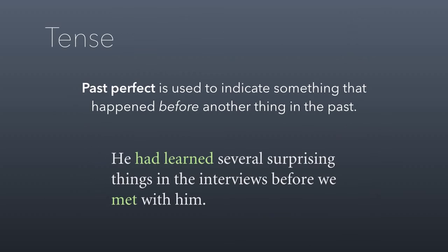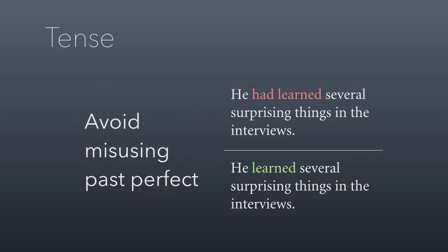Past perfect leads people into common mistakes. The past perfect is used to indicate something that happened before another event in the past. A correct sentence: 'He had learned several surprising things in the interview before we met with him.' Here, 'met' is the past tense verb, and 'had learned' indicates it happened before that past event. However, people sometimes use the past perfect when they should just use the simple past. 'He had learned several surprising things in the interviews' — without a reference point — is incorrect. Just say 'He learned several surprising things in the interviews.'